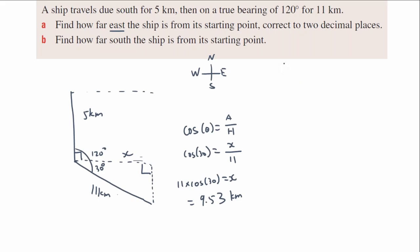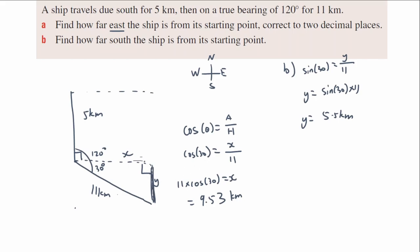Part B — find how far south the ship is from the starting point. I'll call the southward component of the second leg y — that's the opposite side over the hypotenuse. So sin 30 equals y over 11, meaning y equals sin 30 times 11, giving 5.5 kilometers. However, that's not the final answer — I need to add the initial 5 kilometers traveled south. So 5.5 plus 5 equals 10.5 kilometers. The ship is 10.5 kilometers south of its initial position.